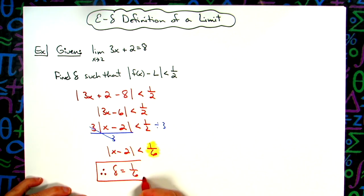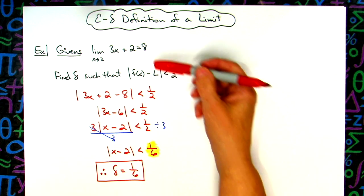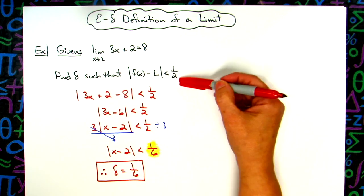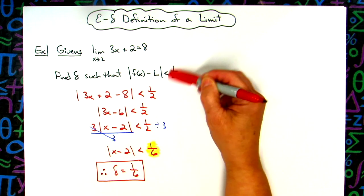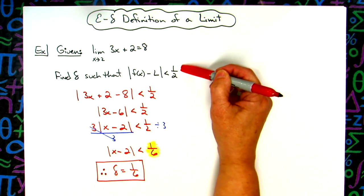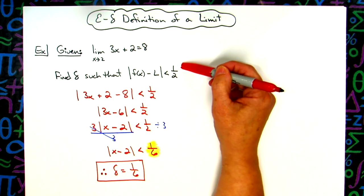So like I said, pretty straightforward application of this epsilon-delta definition of a limit. A lot of times, they're not going to be this explicit in the problem. They're just going to give you the epsilon value and then ask for delta, and then that means you're going to have to memorize this portion of what to do.